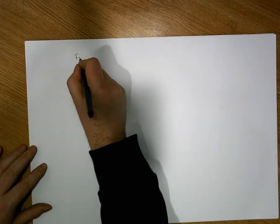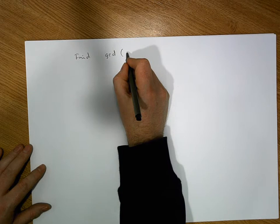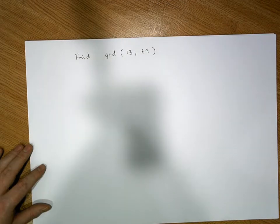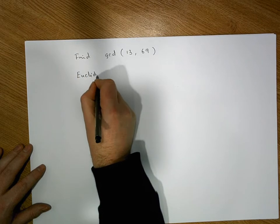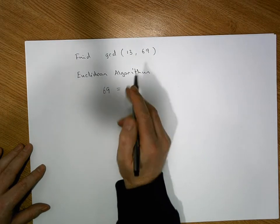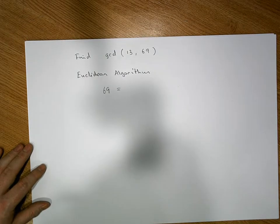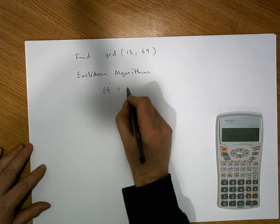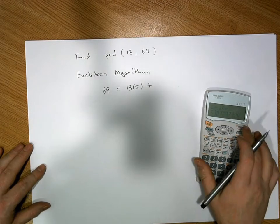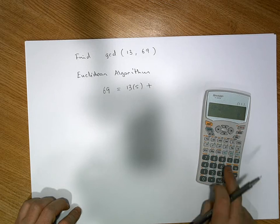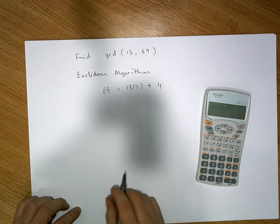Let's do one more example. Let's find the GCD of 13 and 69. Applying the Euclidean algorithm: we take the largest number, which is 69. How many times does 13 divide into 69? It goes in five times. So 69 must be equal to 13 times 5 plus some remainder. 69 minus 13 times 5 gives a remainder of 4.